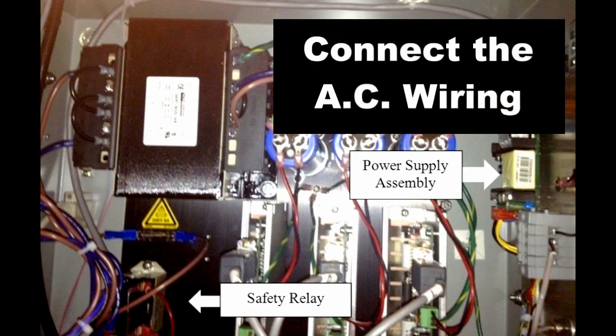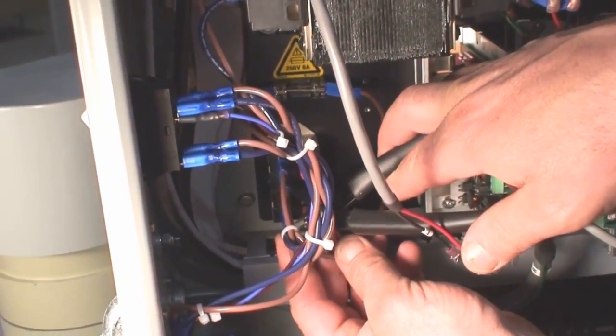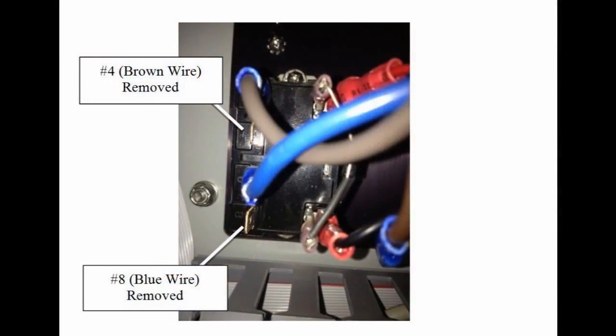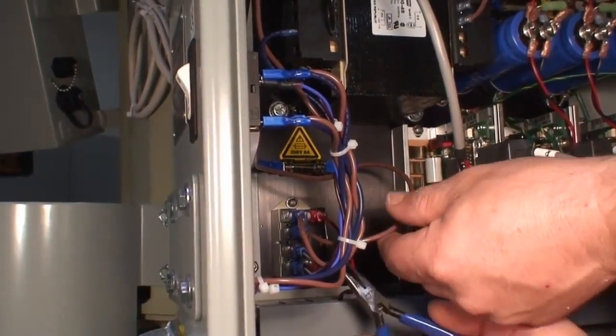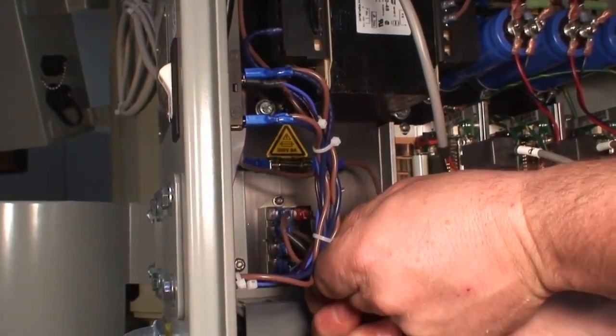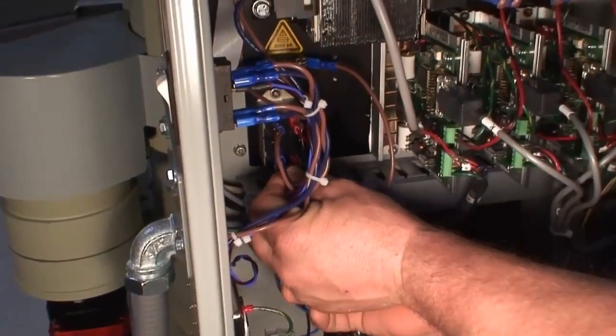Find the safety relay. It's located under the large transformer on the left hand side of the box. It's gray and black. Cut the wire ties holding the bundle of wires going to this relay. We're going to remove two wires from this relay - the brown wire from the second terminal down and the blue wire from the fourth terminal down on the left. To remove these wires, grab the connector, not the wire, with a pair of pliers. Wiggle up and down. Don't wiggle from side to side. They're a little difficult to get off.